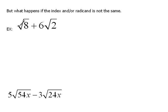In this case, if we add square root of 8 plus 6 square roots of 2, these radicands are not the same thing. Or are they?